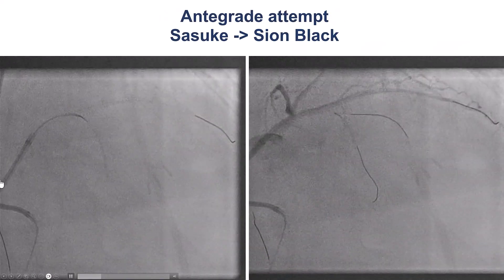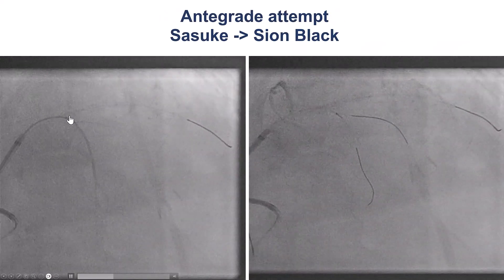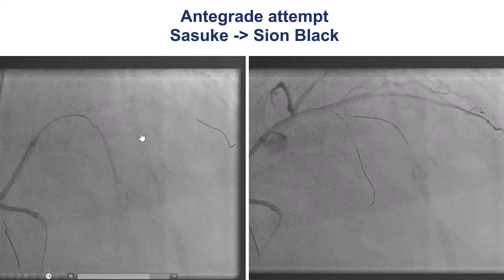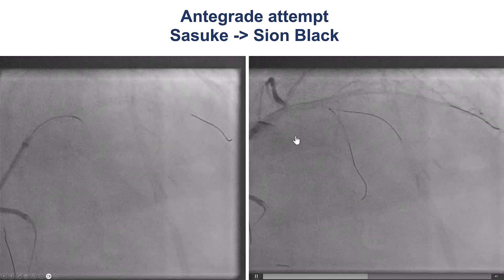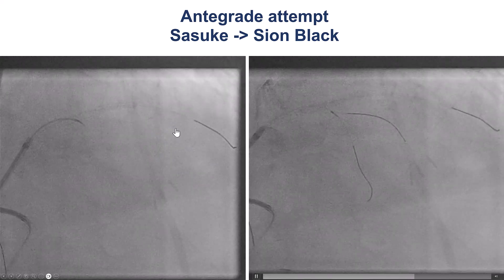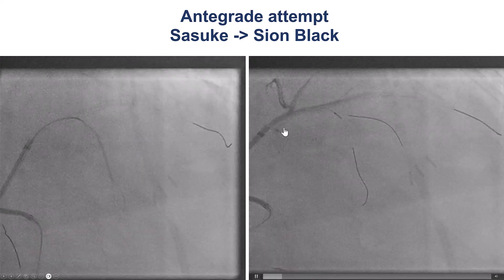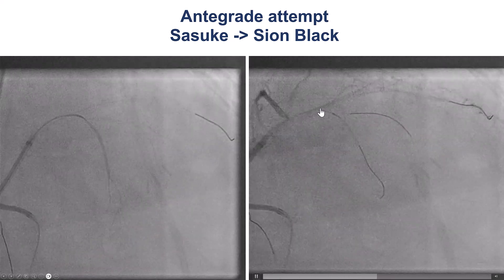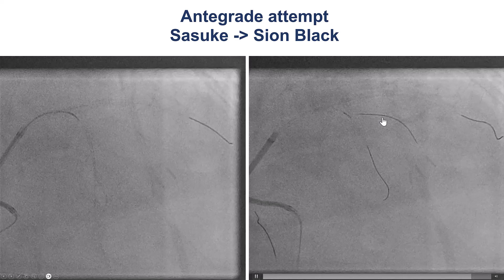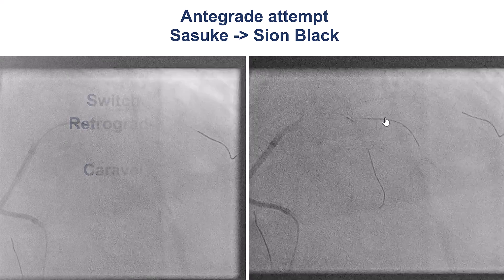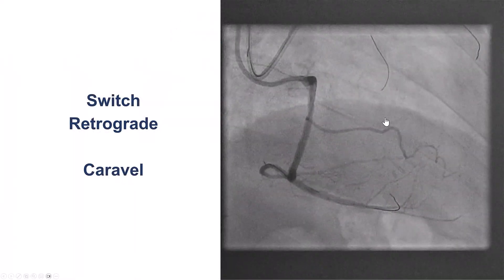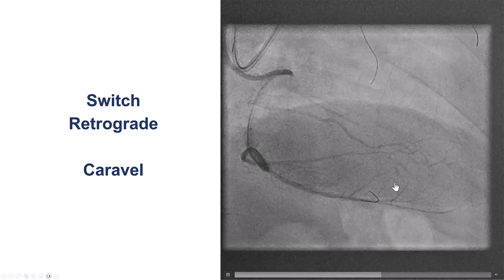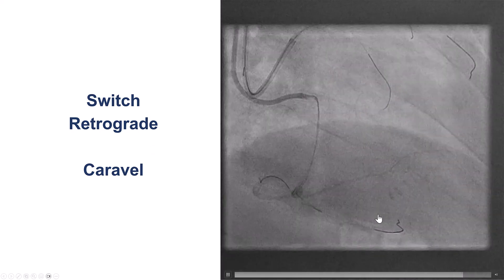When the patient came to the cath lab, we did some additional attempts to determine where the proximal cap is. We inserted a wire into these branches, tried to do intravascular ultrasound, and used a dual-lumen microcatheter, but clearly this was not connected. So we decided to switch to the retrograde approach.